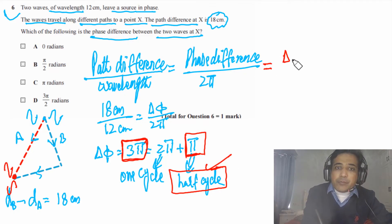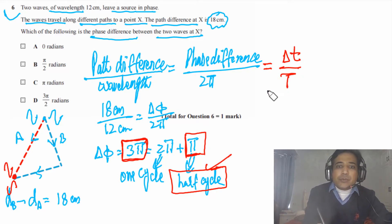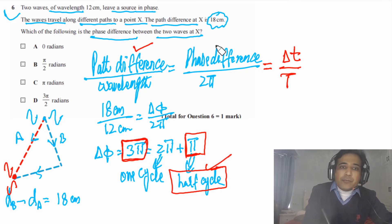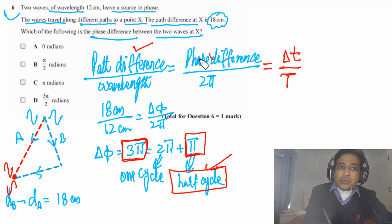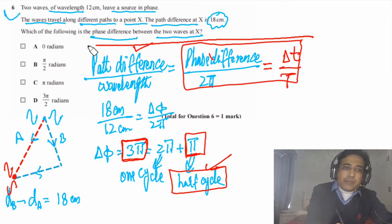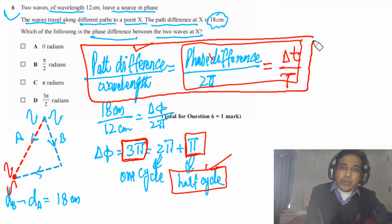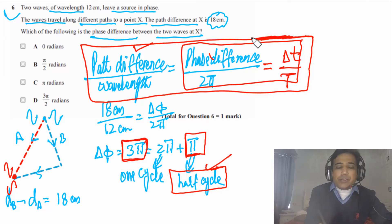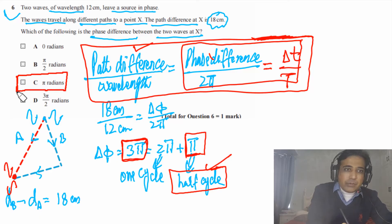We can extend this idea: time difference divided by time period also equals phase difference divided by 2π. So if phase difference is given and you need path difference, or if time difference is given and you need phase difference, you can use these relationships. This is very important for waves and many students struggle with it. The answer for Question 6 is C.